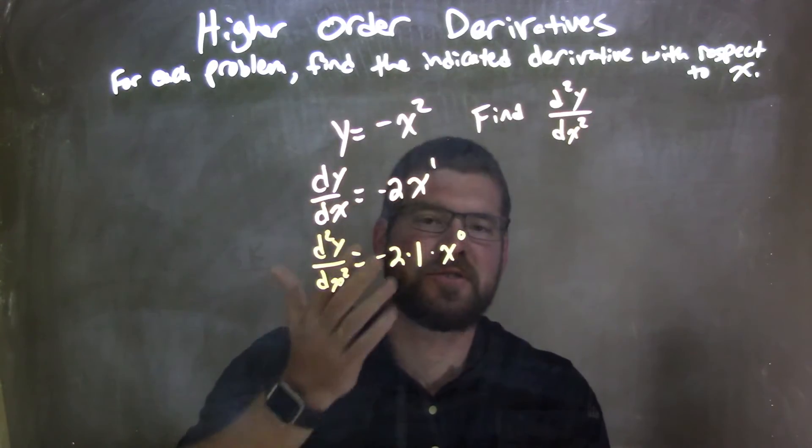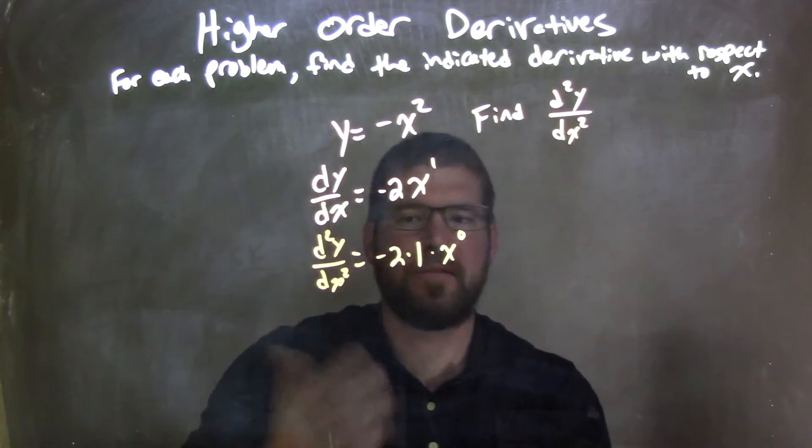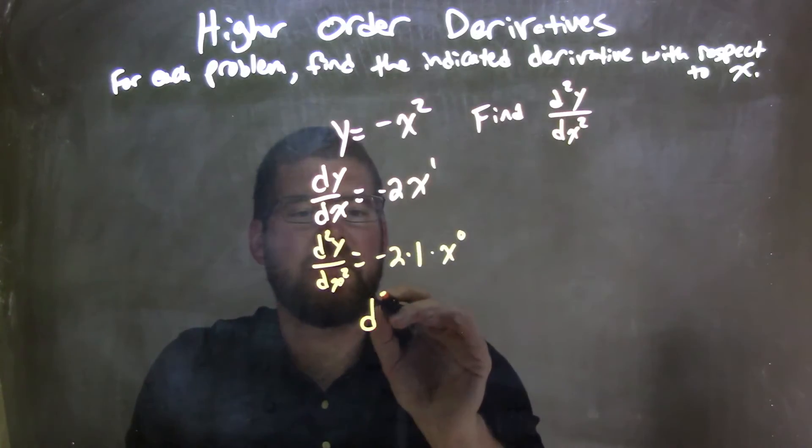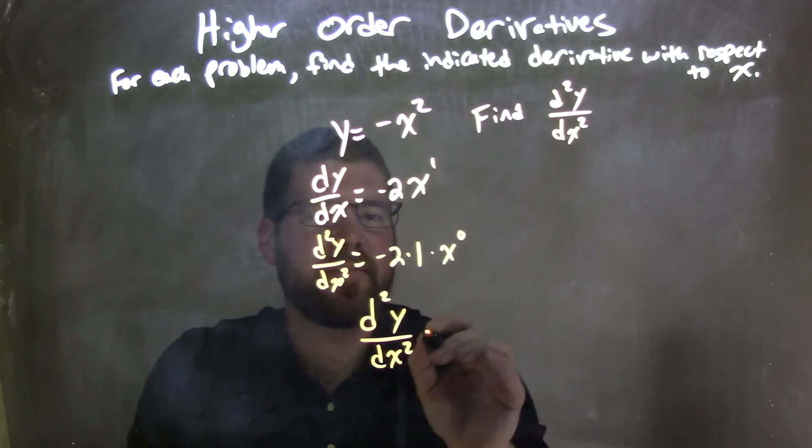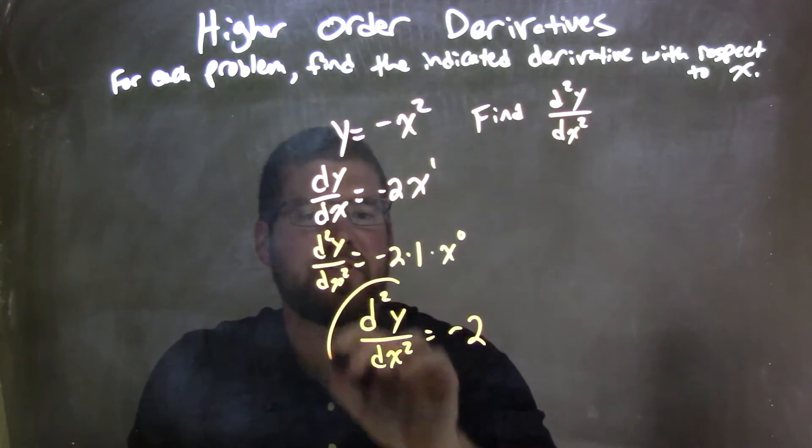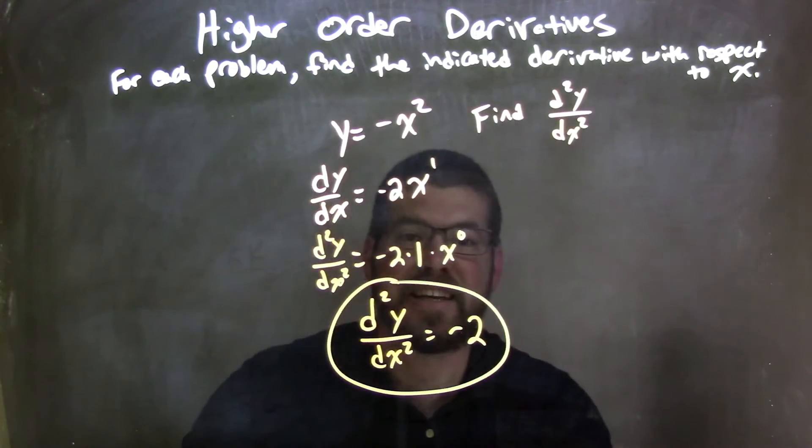x to the 0 power is just 1. And negative 2 times 1 is negative 2. So our final answer is d²y/dx² equals negative 2. Our second derivative is just negative 2.